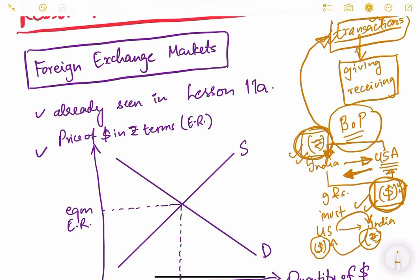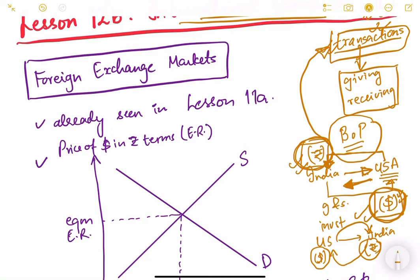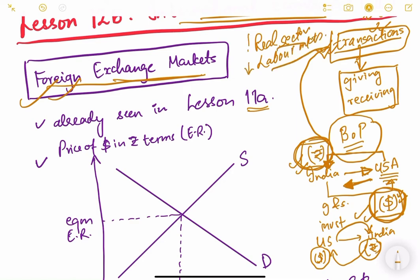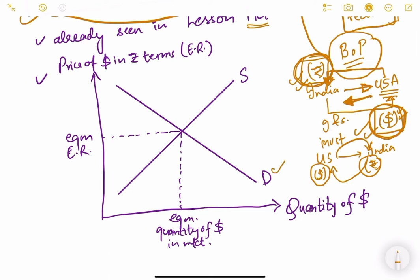From here, the main concept of the foreign exchange market comes out. As explained in lesson 11A, there are different types of markets — real sector markets, labor markets, financial markets, money markets — and the foreign exchange market is also an important market in economics. Whenever it comes to a market, there is demand and supply, and here we are looking at demand and supply of foreign currency.